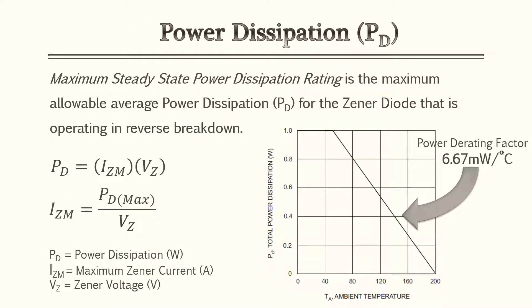A very common parameter you'll see with Zener diodes is power dissipation. The maximum steady-state power dissipation rating is the maximum allowable average power dissipation for the Zener diode operating in the reverse breakdown condition. When designing a circuit using a Zener diode in reverse bias, every diode has its own voltage rating as well as its own power dissipation rating — for example, a maximum of one watt. Every datasheet has a power derating factor. The power derating factor is the amount of maximum power dissipation that decreases as operating temperature increases, usually shown as a downward slope.